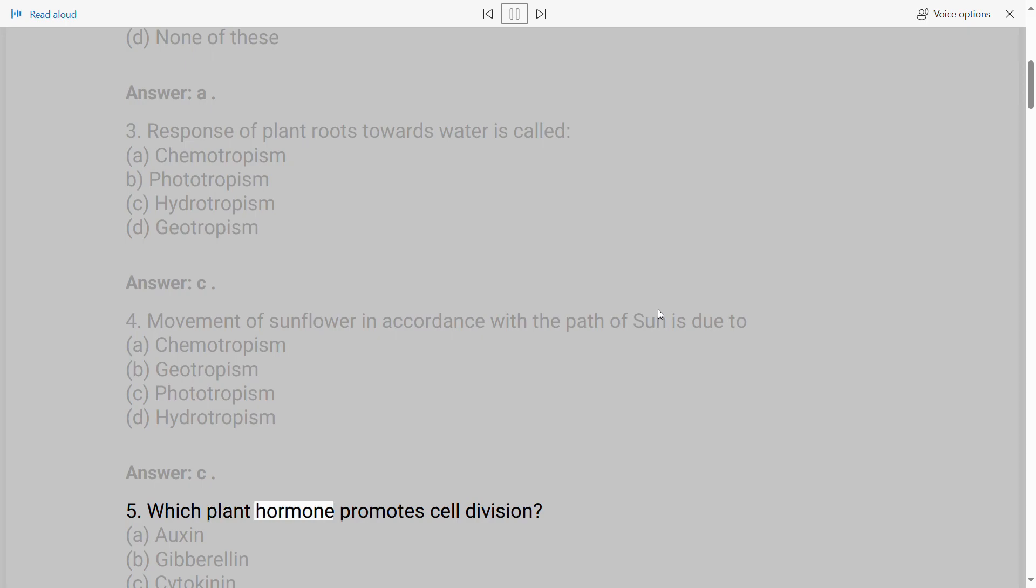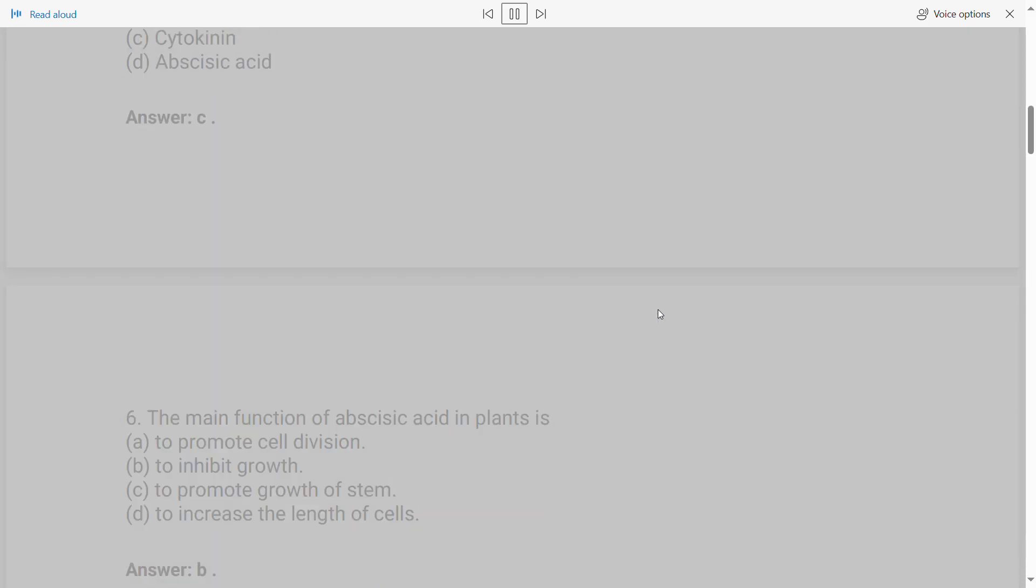5. Which plant hormone promotes cell division? A. Auxin B. Gibberellin C. Cytokinin D. Abscisic Acid. Answer: C.